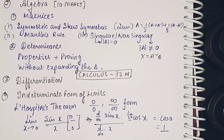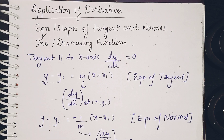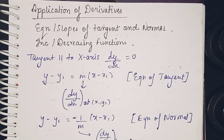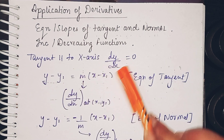Note that forms like 0⁰ or ∞⁰ are not in your syllabus, so only practice questions within the syllabus. Next is Application of Derivatives — two topics have already been removed from this chapter. The remaining portions are: equations and slopes of tangents and normals, and increasing and decreasing functions.